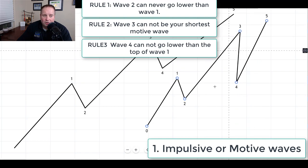Now, there are some exceptions to this rule. They are called diagonals, and they are a little bit more advanced than this video will allow. We will have another video on that rule exception. In general, wave four should never invade wave one territory. So that's our three rules. Remember, wave two can never be lower than wave one, wave three can never be your shortest motive wave, and wave four can never enter wave one territory.